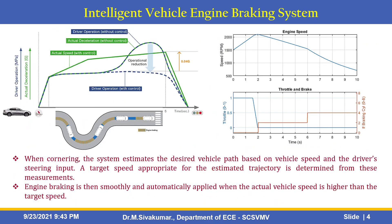This diagram shows an intelligent vehicle engine braking system. This graph shows time versus actual deceleration in the form of driver operation, actual speed versus actual deceleration, without control and with control, and driver operation with control and without control.